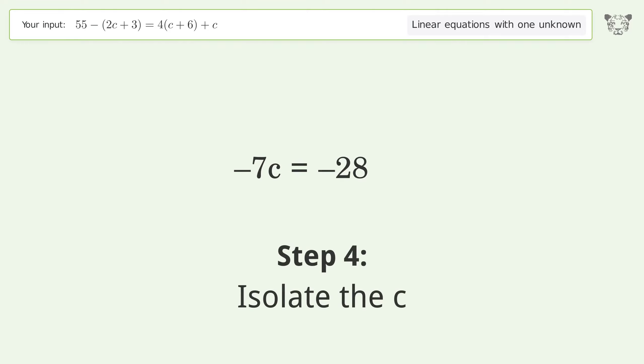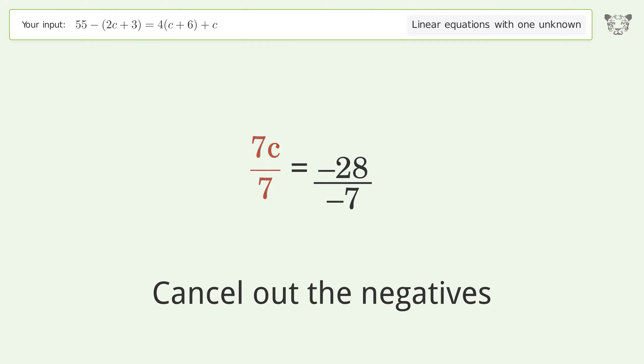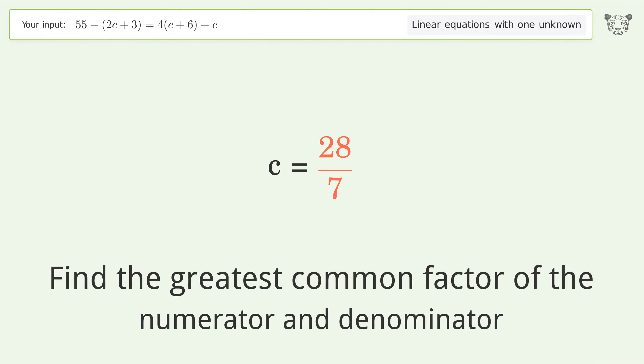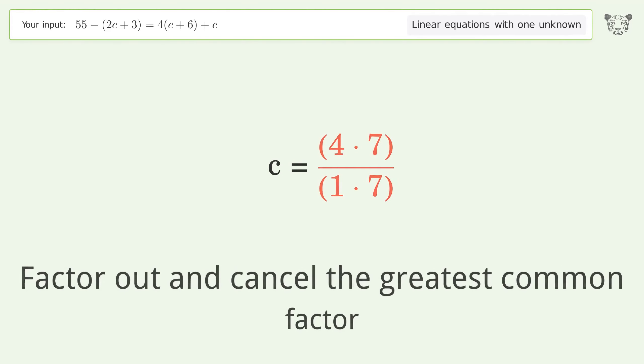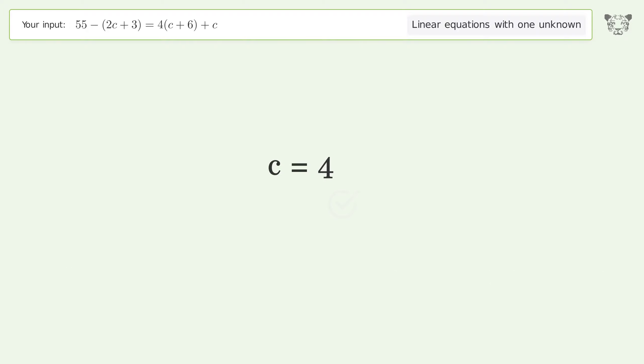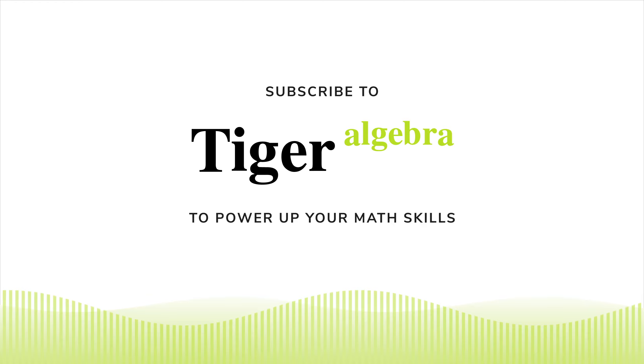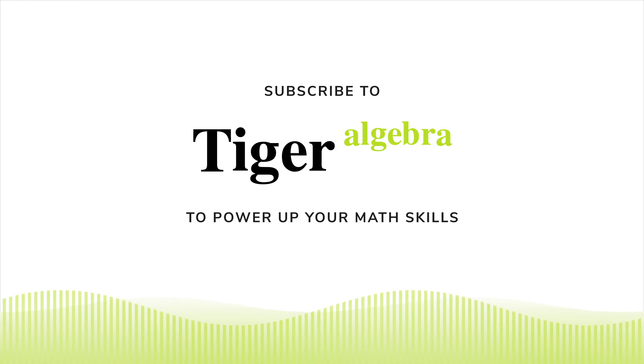Isolate the c. Divide both sides by negative 7. Cancel out the negatives. Simplify the fraction and cancel out the negatives. Find the greatest common factor of the numerator and denominator. Factor out and cancel the greatest common factor. And so the final result is c equals 4.